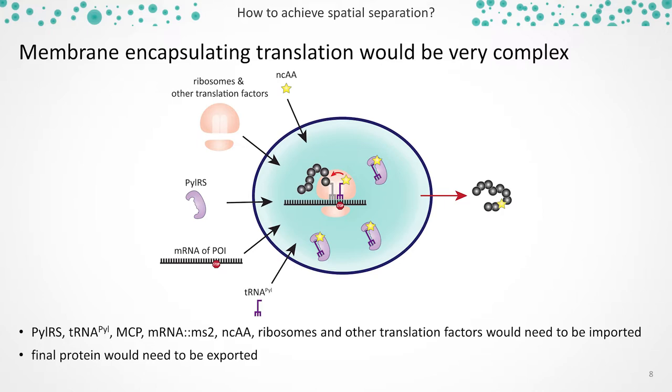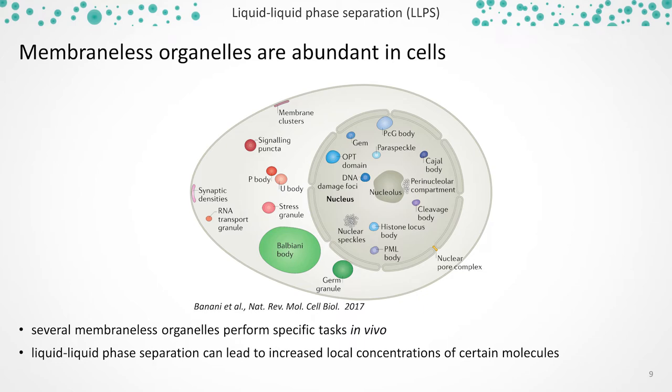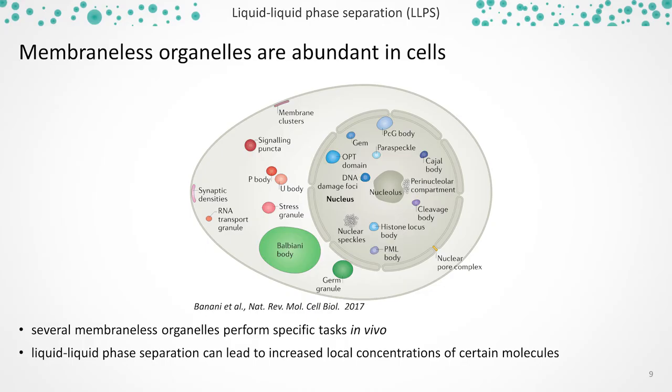However, when you look into eukaryotic cells, there are also many membrane-less compartments formed by liquid-liquid phase separation that can still perform complex tasks. We thought we could use a similar approach, because having no membrane boundary means it is basically open to the surrounding nucleoplasm and cytoplasm, and should therefore enable access to ribosomes and other translation factors.